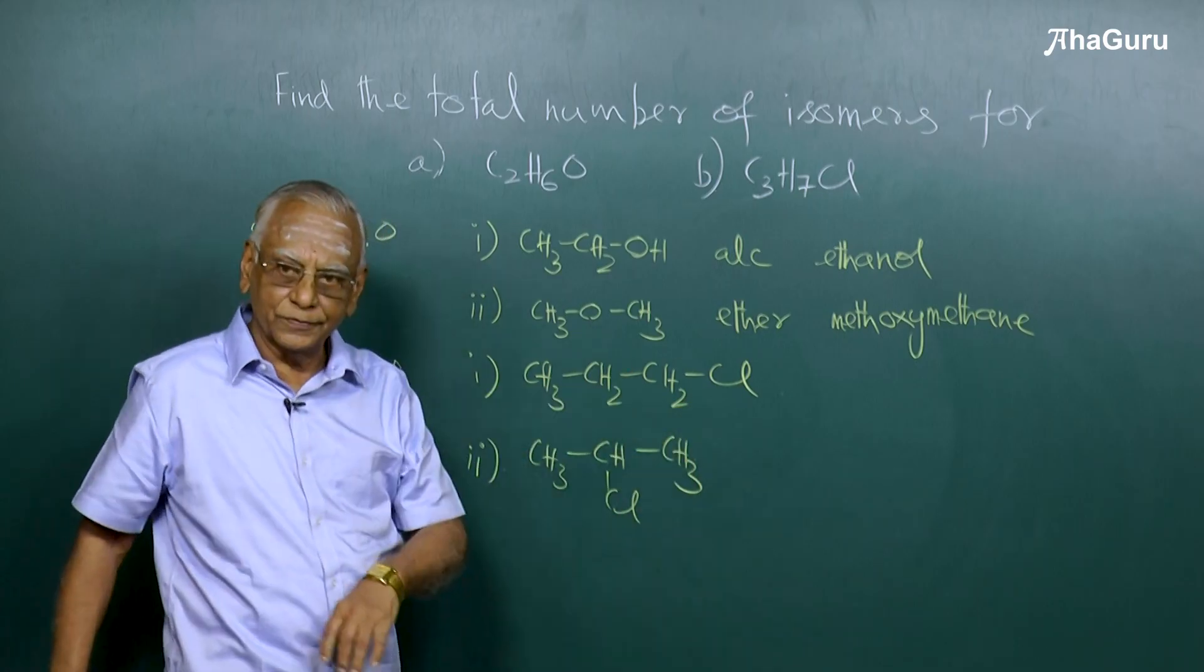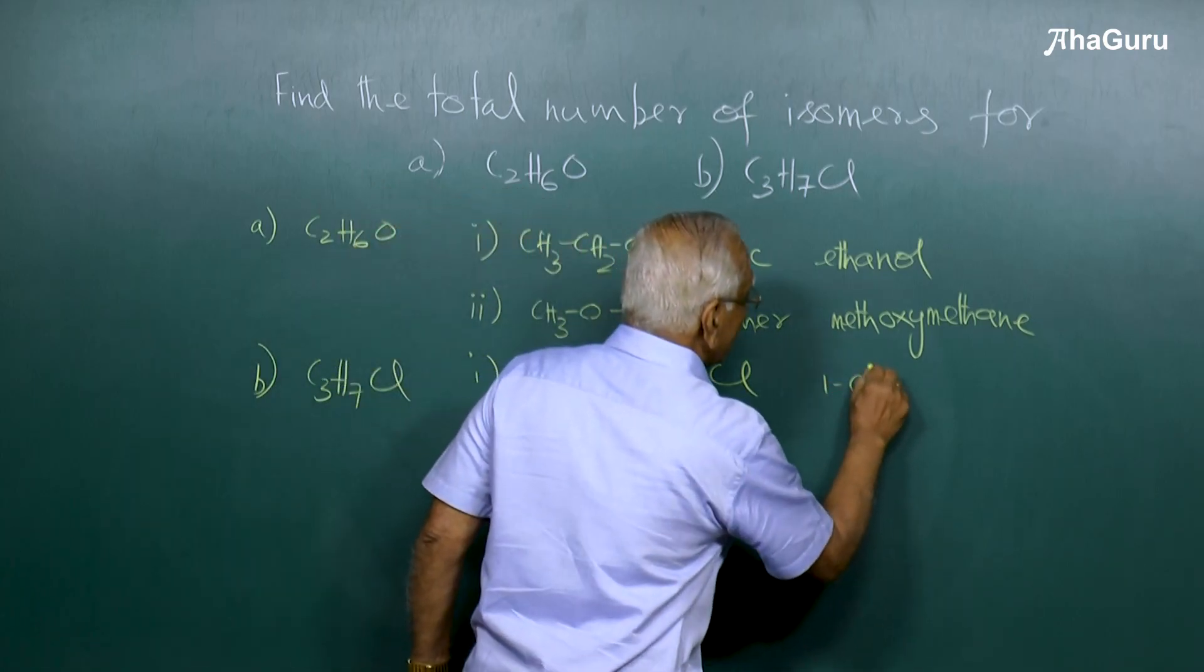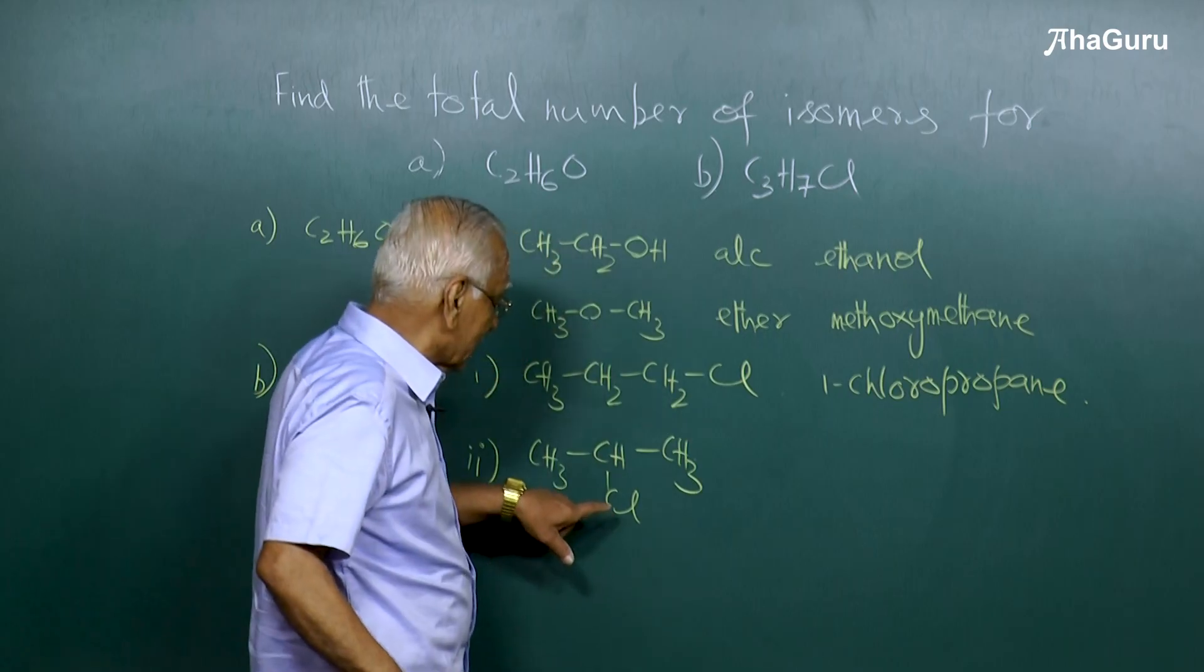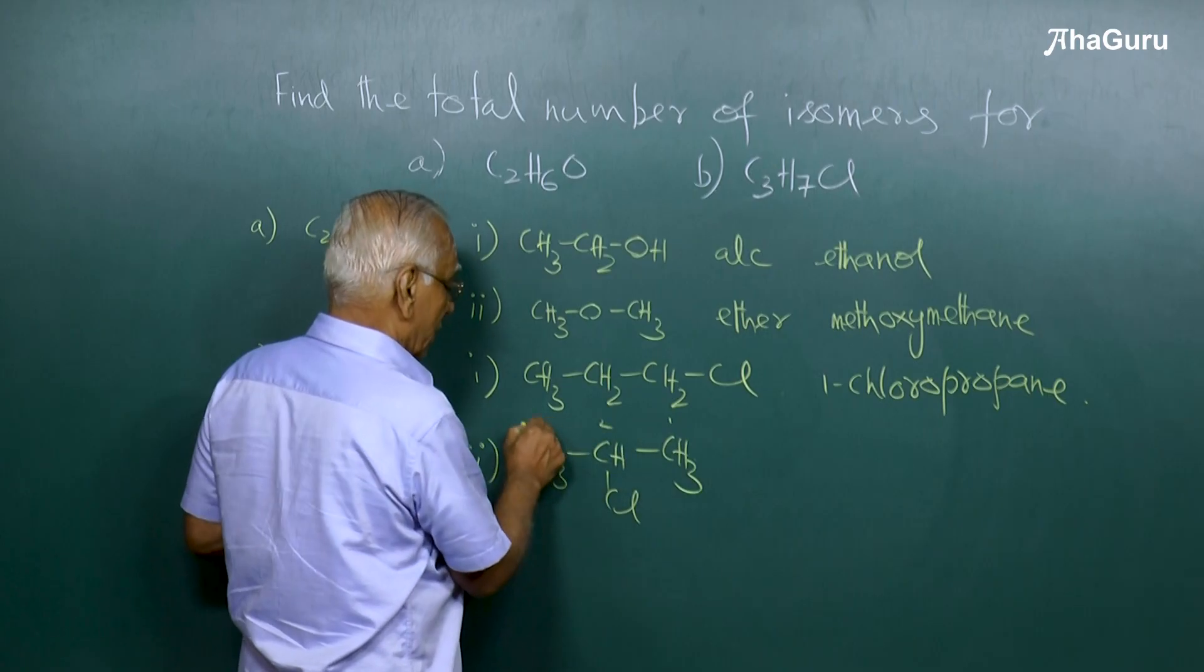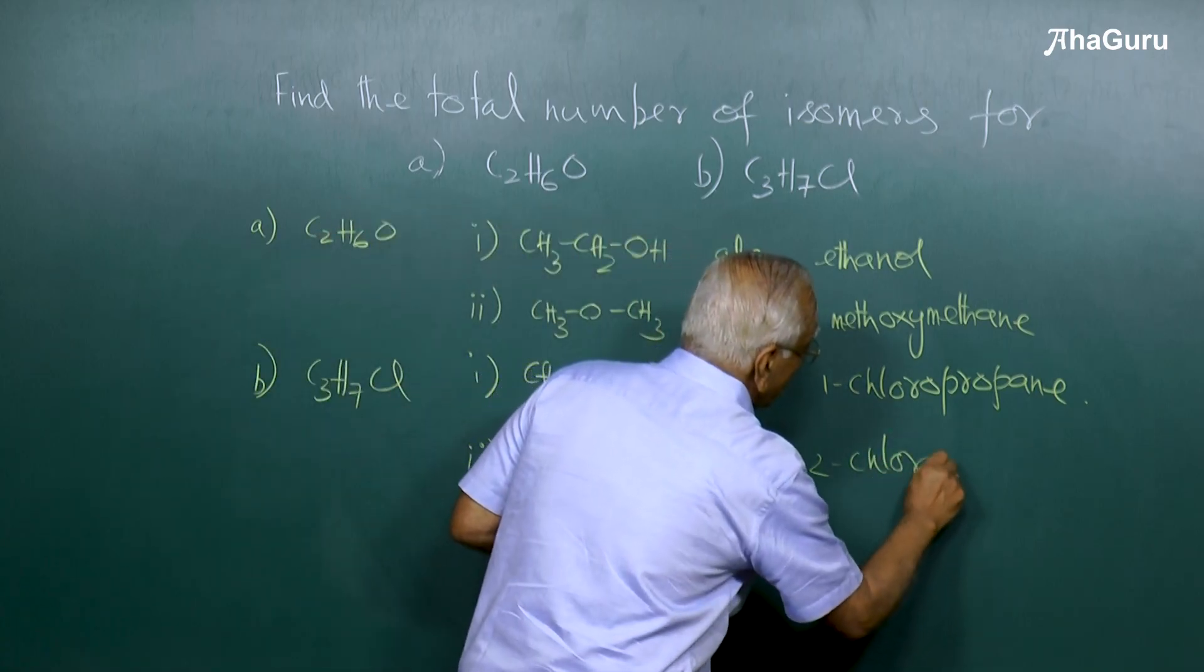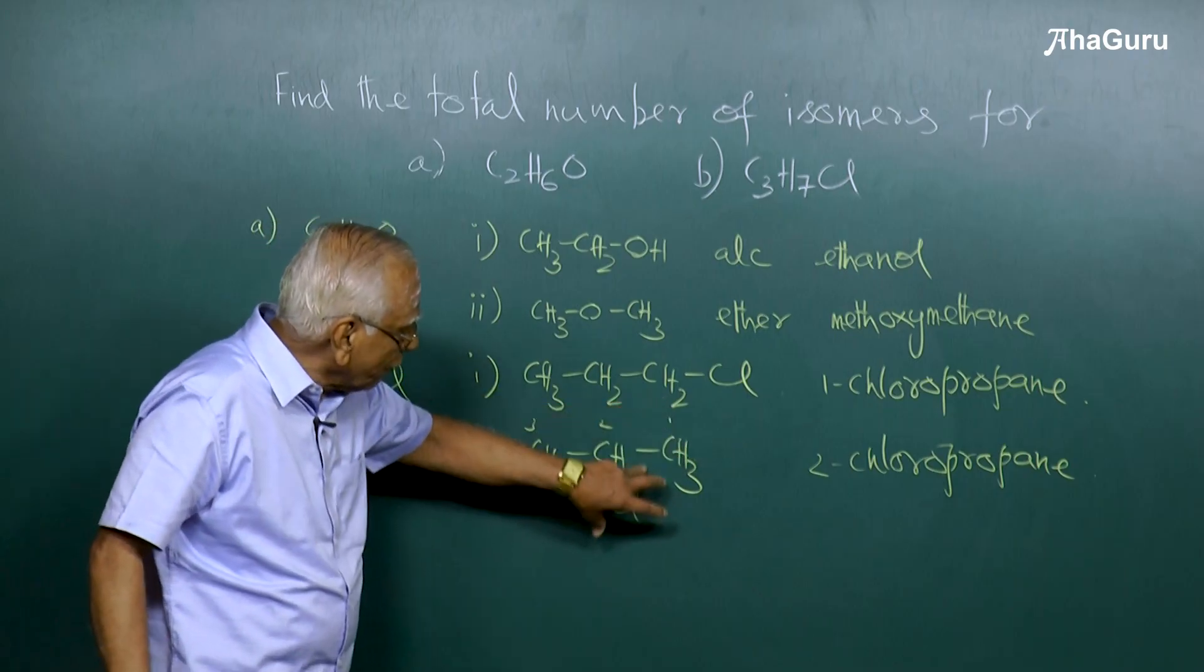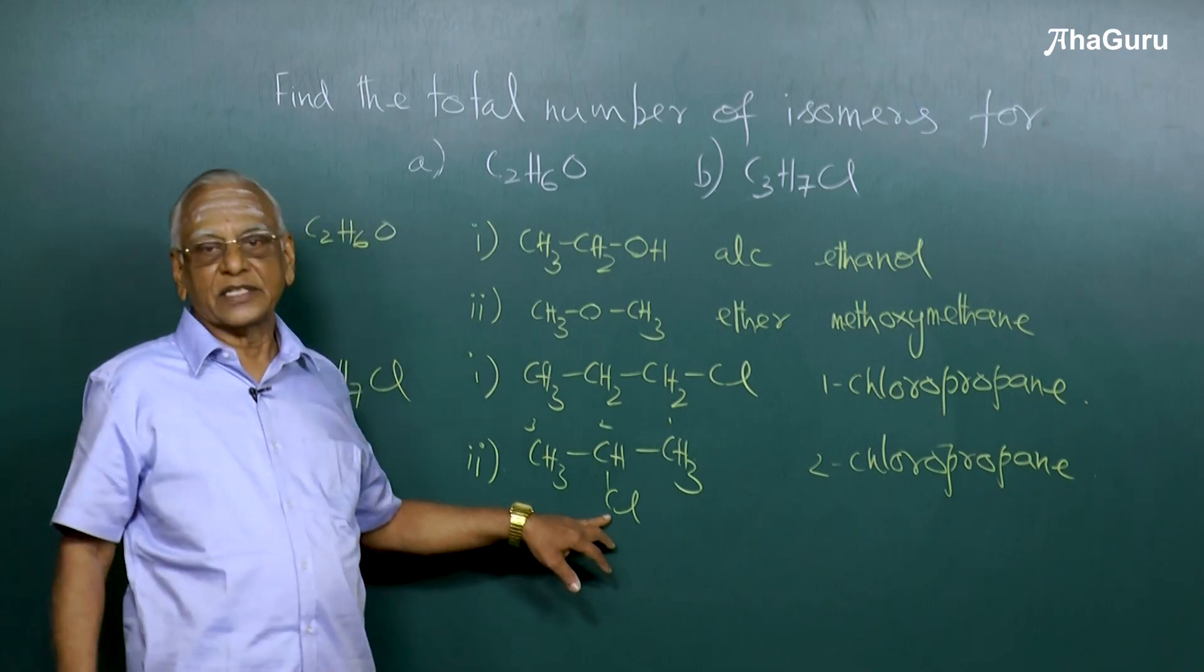But the position of the functional group is different. One is 1-chloropropane, the other one is 2-chloropropane where the chlorine is attached to the second carbon atom. The molecular formula is the same, the functional group is also identical, but the position of the functional group is different here.